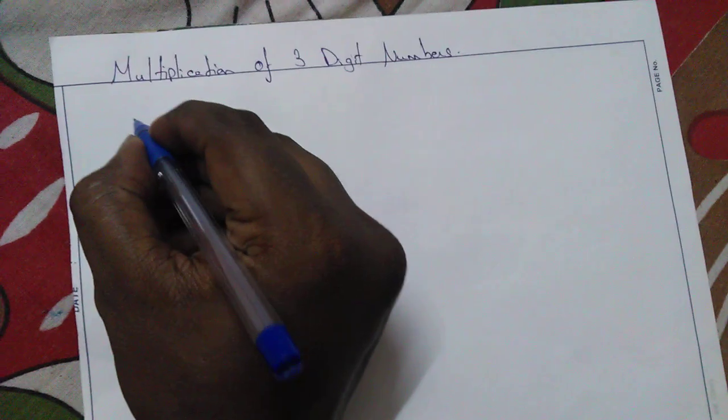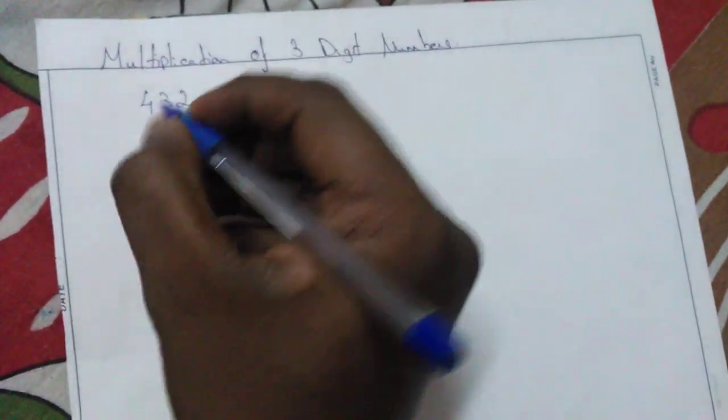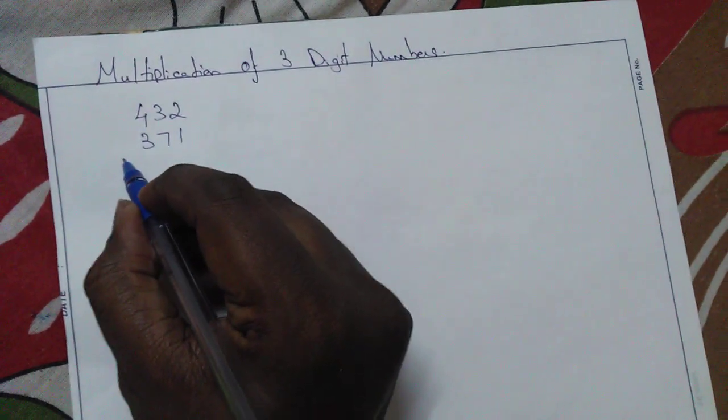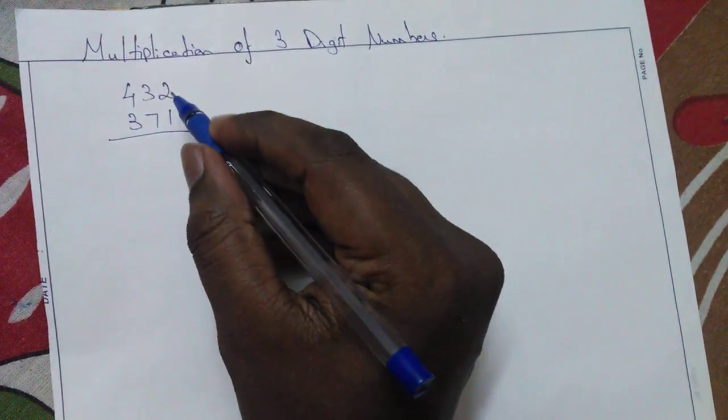Let's see with an example. Let's say we have 432 and 371. Let's see how we can multiply using this easy and fastest method.